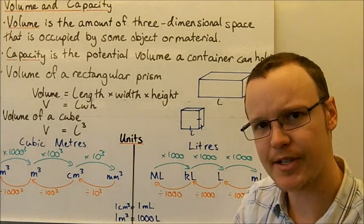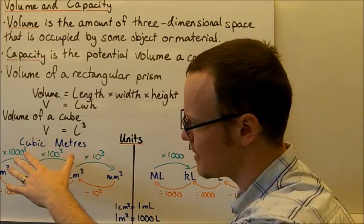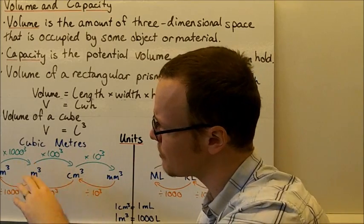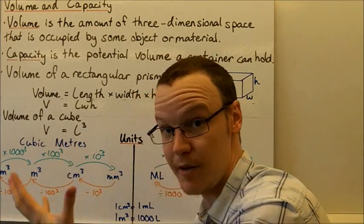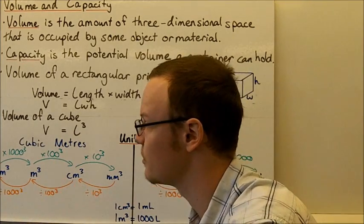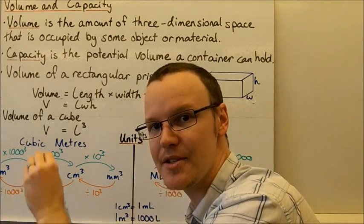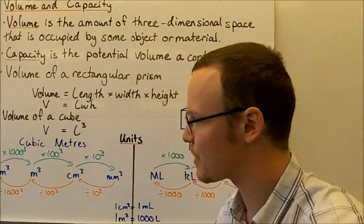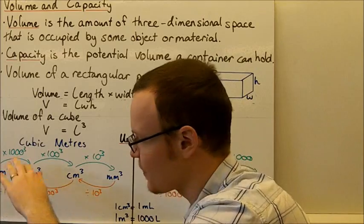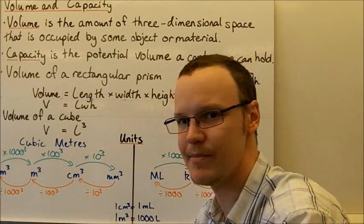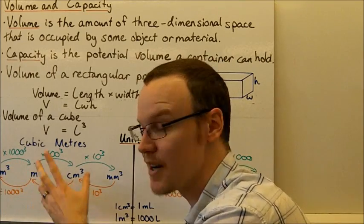With cubic units, similar to square units, there can be some confusion. If we're changing from cubic kilometres to cubic metres, we need to multiply not just by a thousand, but by a thousand cubed — one thousand times one thousand times one thousand — because we have three dimensions of kilometres, so that factor applies three times.